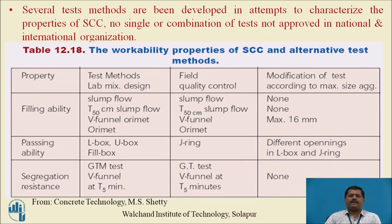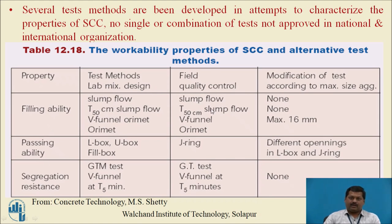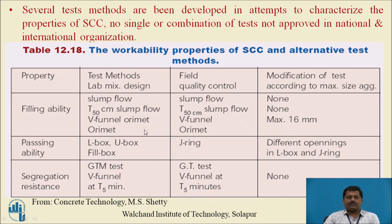Several test methods are developed to characterize these three properties — filling ability, passing ability, and segregation resistance. Test methods are designated for laboratory use as well as for field and quality control, with some modifications suggested based on the maximum size of aggregate. The tests include: slump flow, V-funnel, L-box, and U-box.